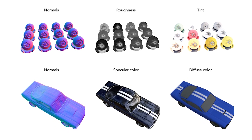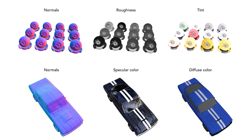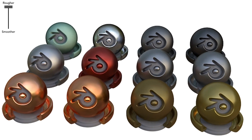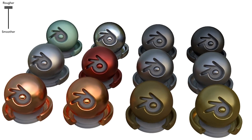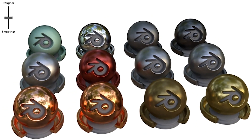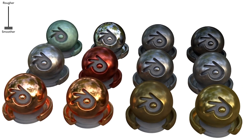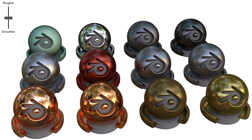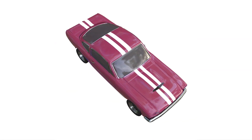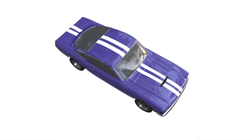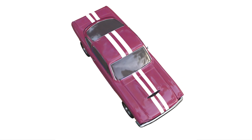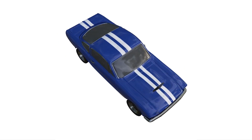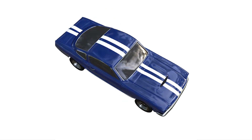Our method also structures outgoing radiance in a way that enables us to convincingly edit scene appearance after training. Here, we increase the scene's roughness, resulting in a change in the perceived shininess of the objects. We can even decrease the roughness of objects in the scene, making them appear shinier. Here we modify the car's diffuse color without changing its specular color — note that the color of the reflections remains the same. We can also manipulate the amount of diffuse and specular color to alter the perceived material properties.